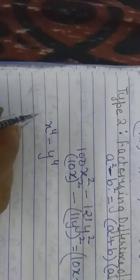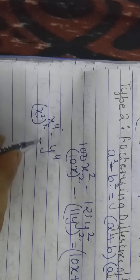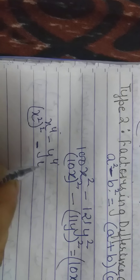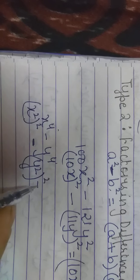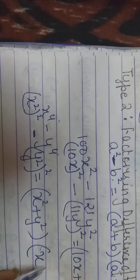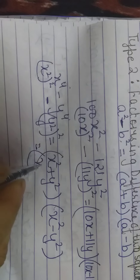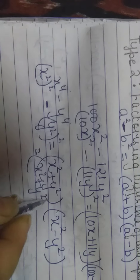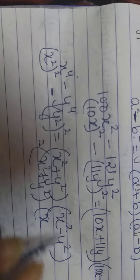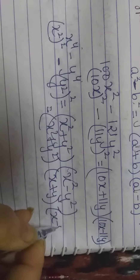Let me take one more example: x⁴ - y⁴. Now x⁴ is the perfect square of x², and y⁴ is the perfect square of y². So it will be (x² + y²)(x² - y²). This can be further expanded: x² - y² factors into (x + y)(x - y). So the full factorization is (x² + y²)(x + y)(x - y).